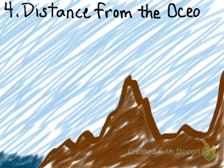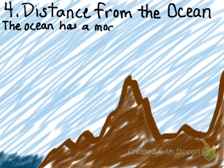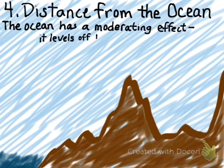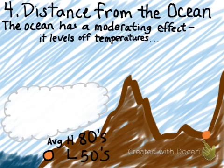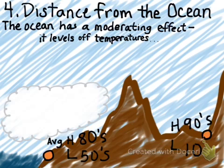The fourth factor that affects our climate here in Utah is our distance from the ocean. The ocean has a moderating or leveling off effect on temperatures. That's because the air along coastal regions is humid. It's full of warm moisture from the ocean.